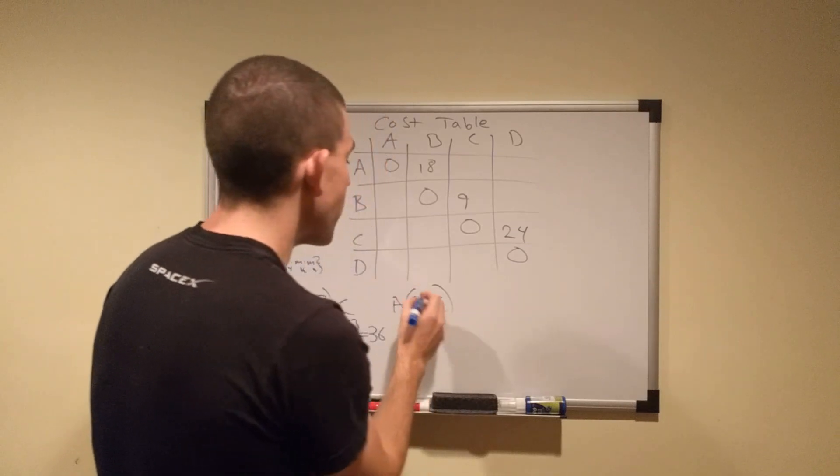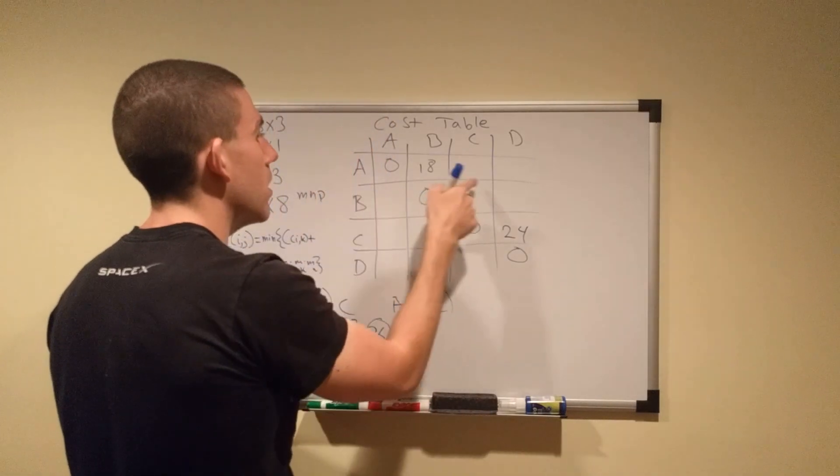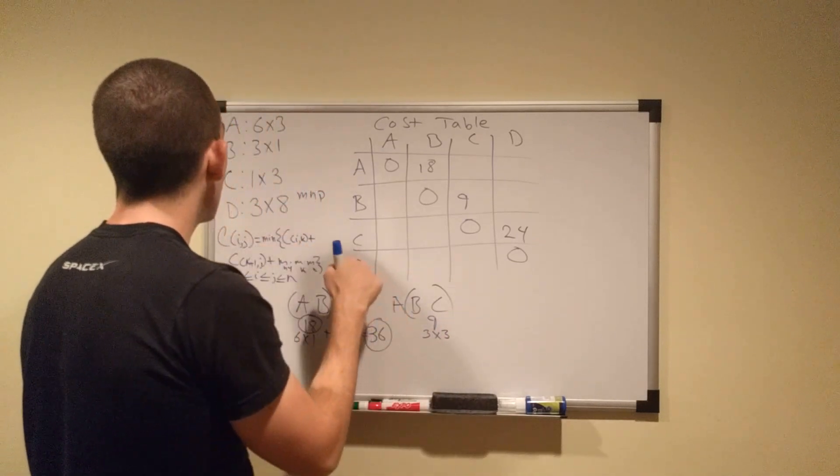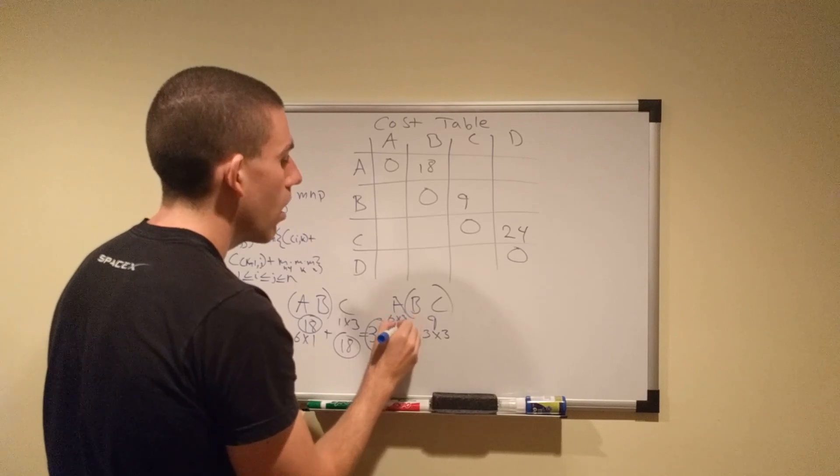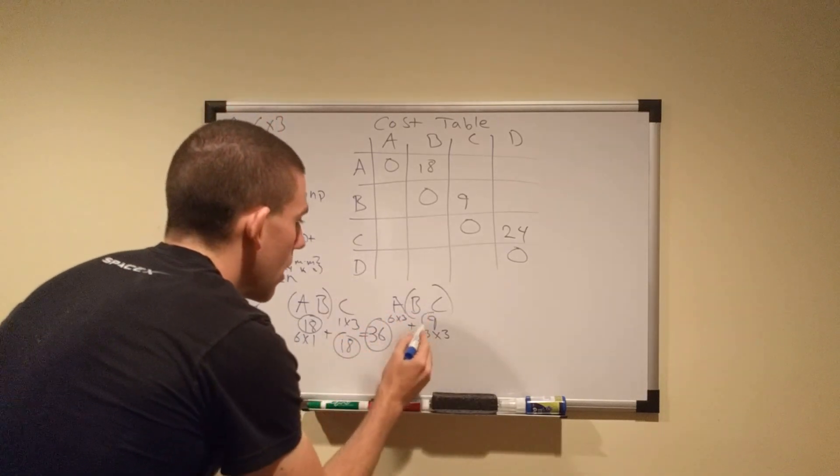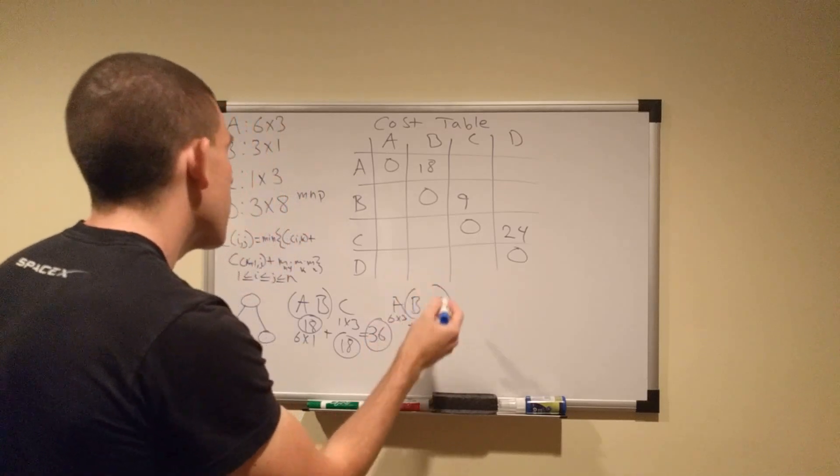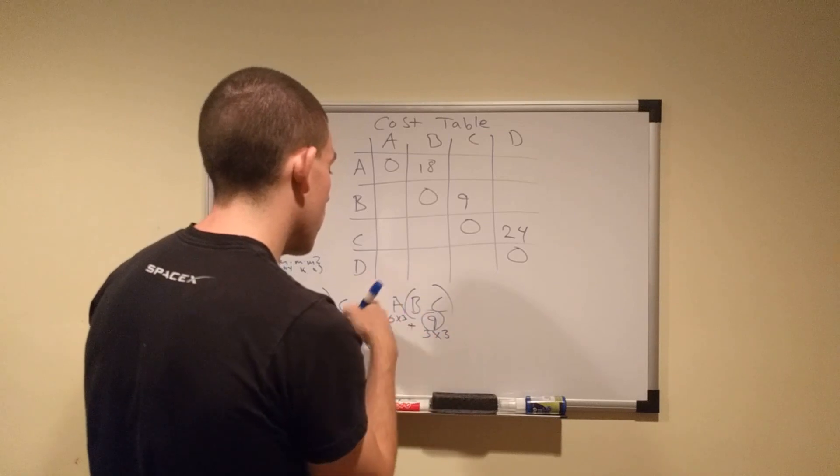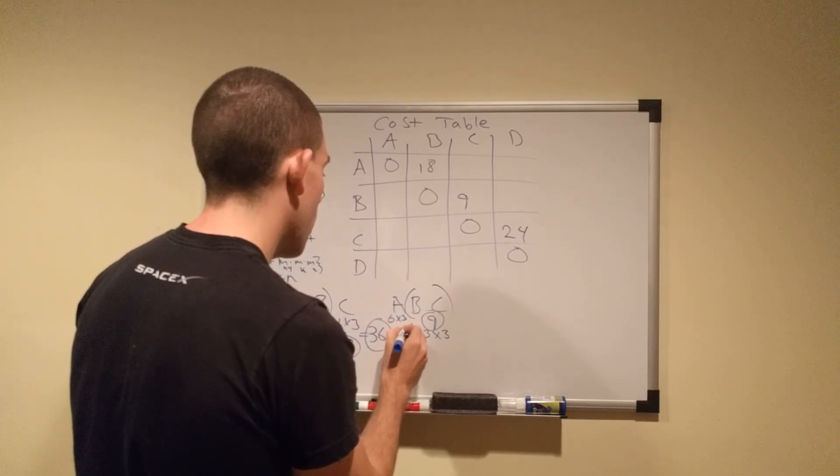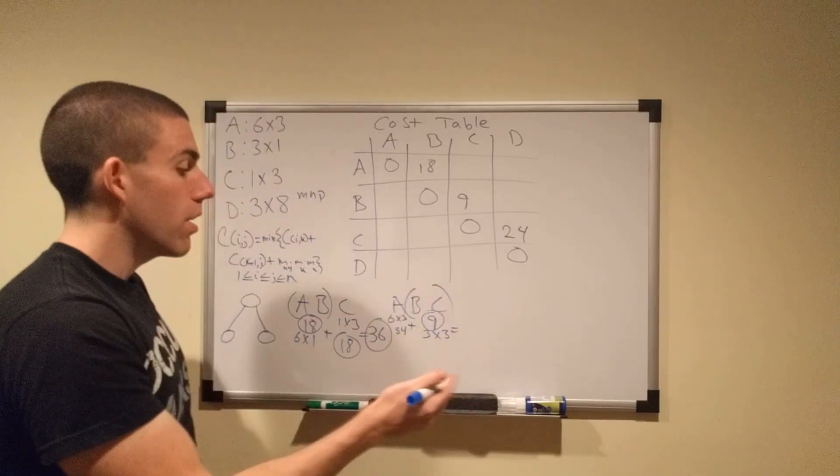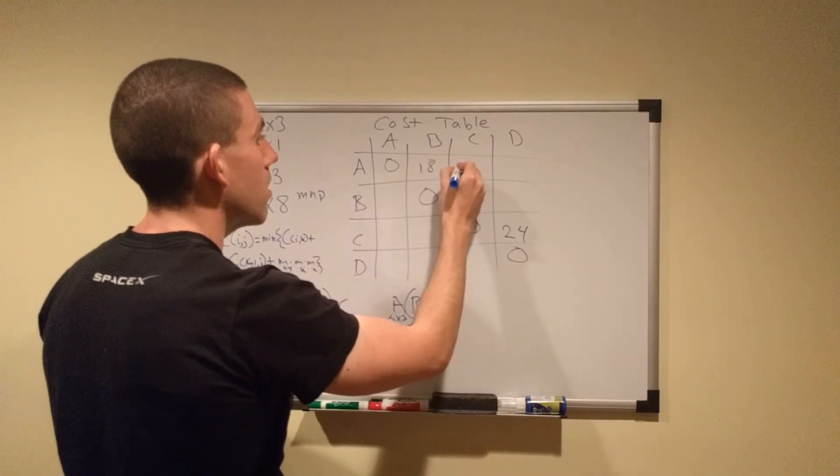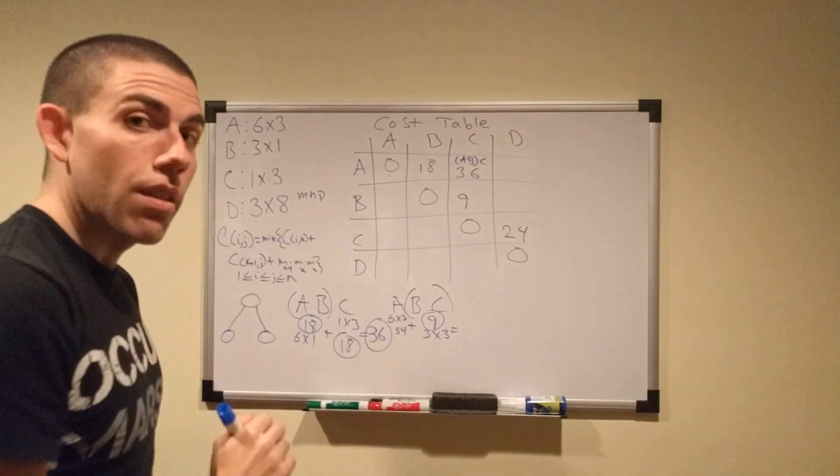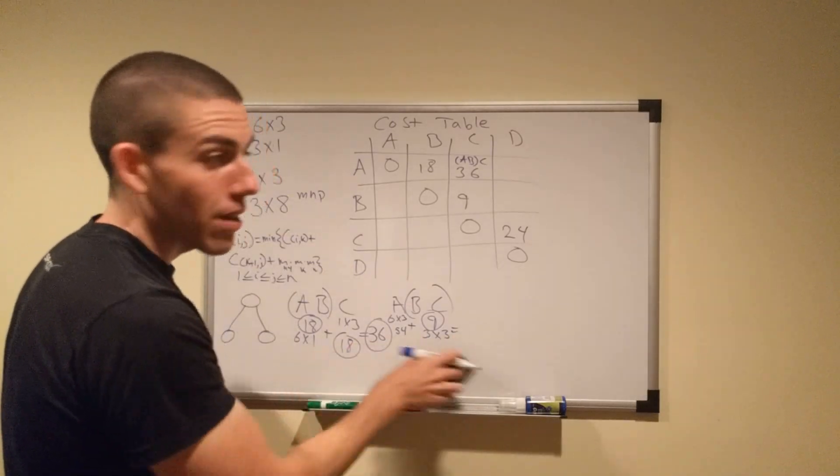That's one option. B times C we know is nine. B times C yields a three by three, however. A is a six by three. So what are we going to do? Six times three is eighteen times three. Six times three is eighteen plus three times eight. Fifty-four. Fifty-four plus nine is bigger than thirty-six. So we're going to go with this: A, B, C. And we're going to denote it in our table to let us know how we got that number of computations.